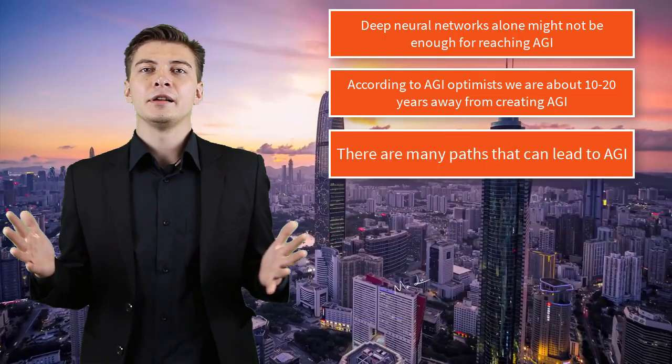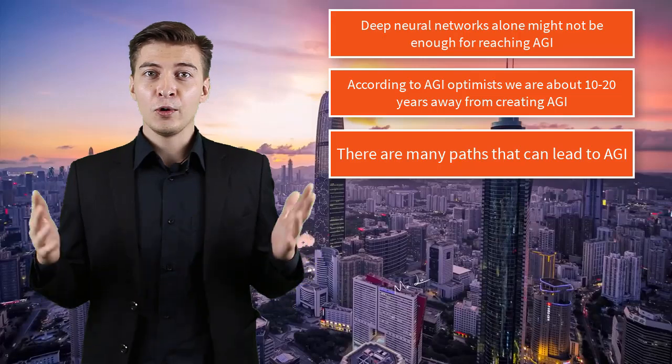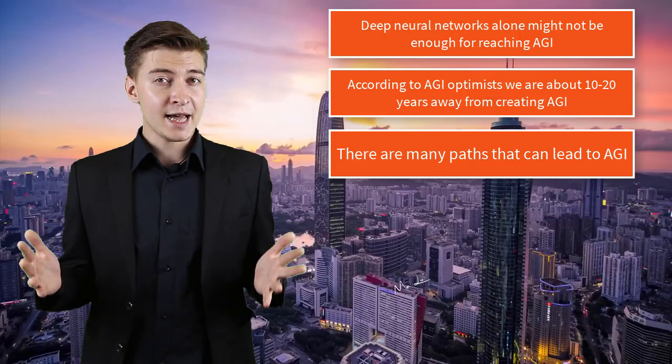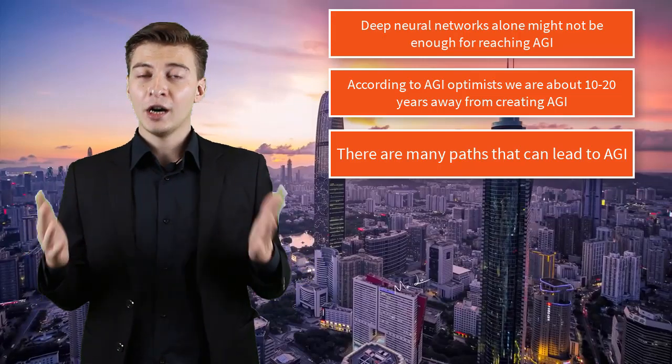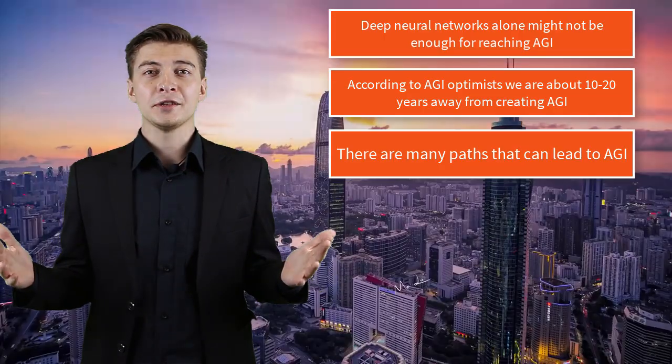For the next thoughts, let's listen to Dr. Goertzel, who explains that there are many paths that can take us to artificial general intelligence. There are a number of different routes we could take to create AGI at the human level and beyond, and it doesn't have to be only one path — we could have a variety of different AGI systems, just as we have many different kinds of flying machines whose operation is grounded in the same aerodynamic principles.